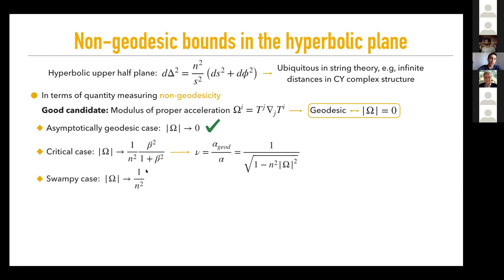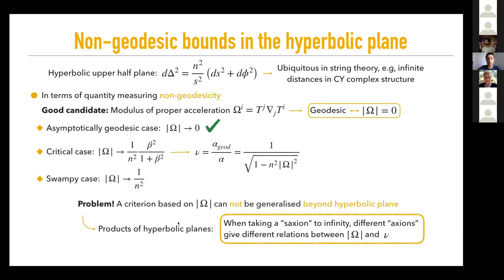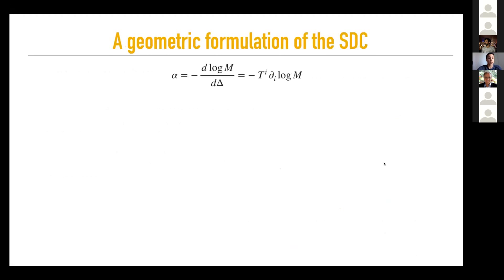A criterion based only on the modulus of the proper acceleration cannot be generalized beyond the hyperbolic plane. If you consider products of different hyperbolic planes and wind in different axion directions, you get different relations between the proper acceleration modulus and the factor nu. There won't be a formula encoding movement in all axion directions simultaneously — you need information about the direction of the tangent vector. So is this the end of the story? Luckily no — let's move to the next section where we give a geometric formulation of the SDC.